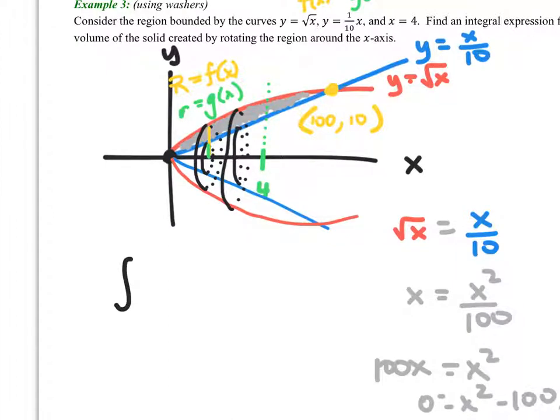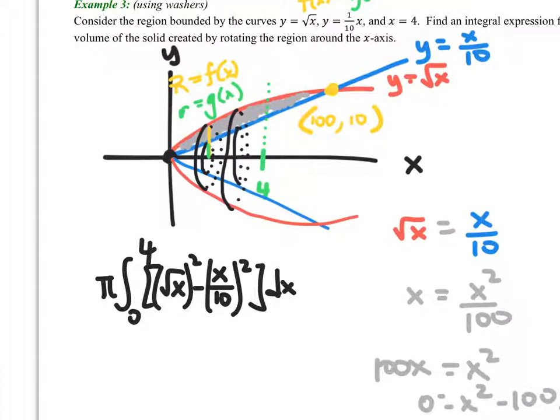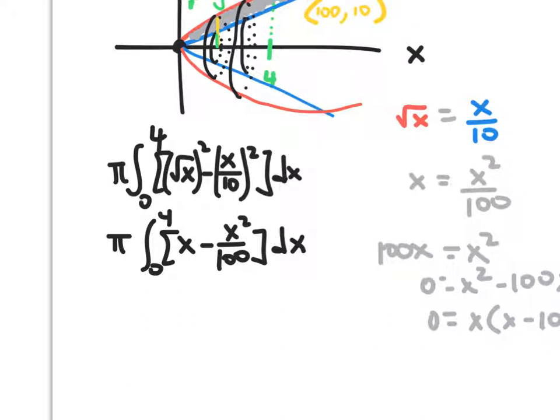And let's build an integral and find that volume. So we're going to take the integral. Don't forget, pi times the integral from 0 to 4 of f(x), which is the square root of x, minus g(x), which is x over 10. We can't forget, though, we're going to square these. And honestly, if you want to, you could simplify it. Put it at 0 to 4 of x minus x squared over 100. If you wanted to, if you just wanted to simplify. Either way, your calculator will do the work for you. So let's go ahead and use the calculator to find the volume of that.